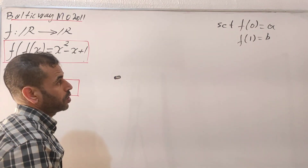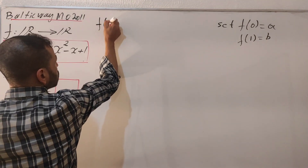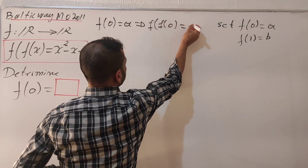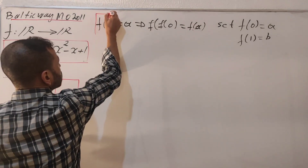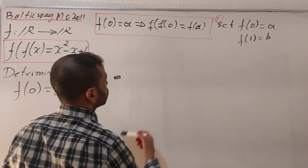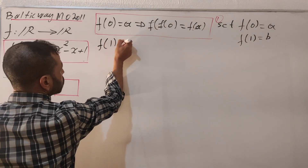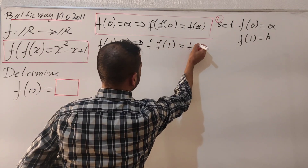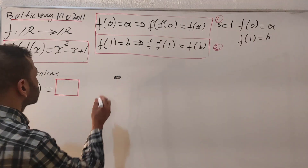We're going to look for f of zero by combining these outputs. So f of zero equals a implies f of f of zero equals f of a — let's call this equation one. Also, f of one equals b implies f of f of one equals f of b — let's call this equation two.